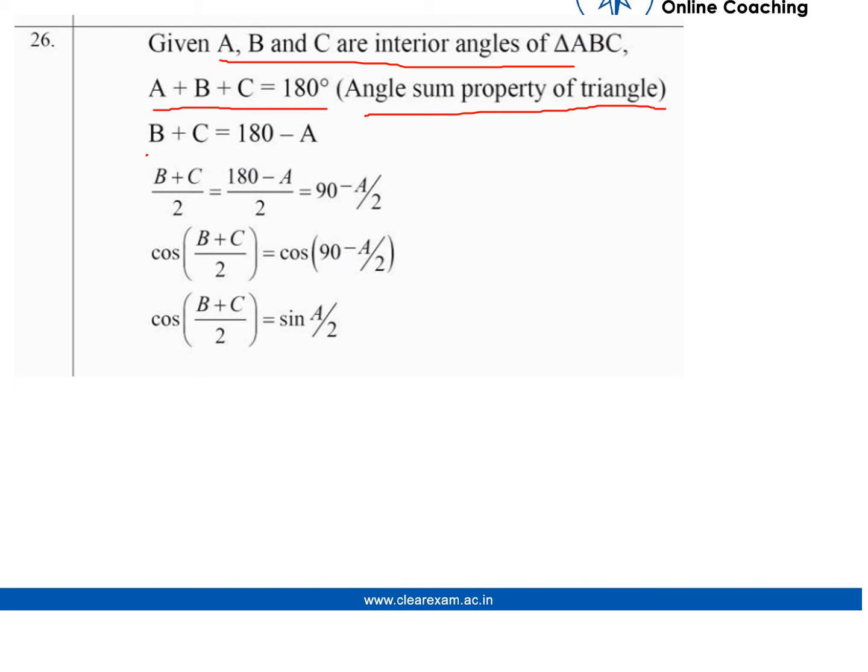Divide both sides by 2, which gives us (B+C)/2 = 90-A/2.